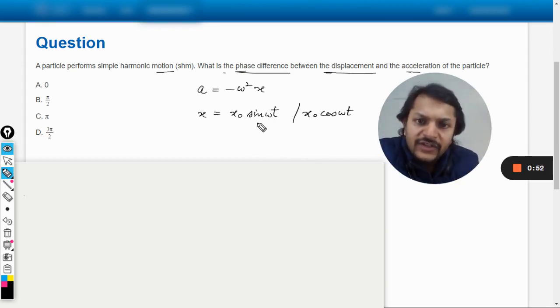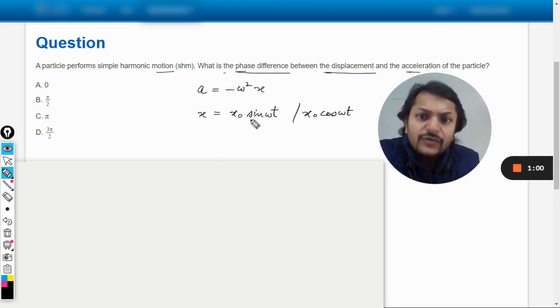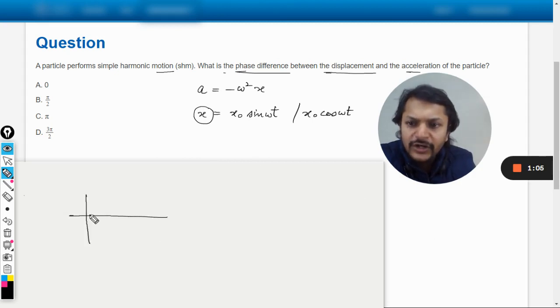So let us go for sine one, or let us go for cos, even that is not a problem. We can see here that acceleration is having a negative sign. So whichever graph this X is going to make, let us say we are going to have a sinusoidal variation in the case of sine.